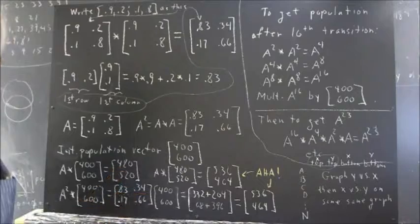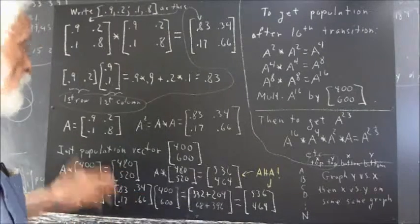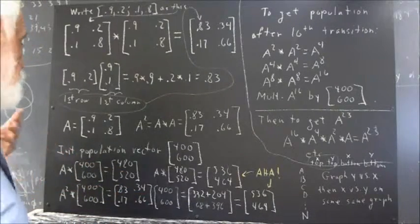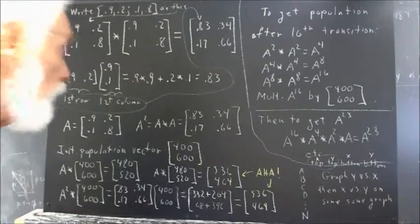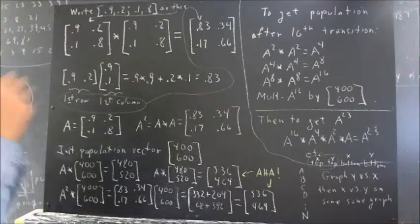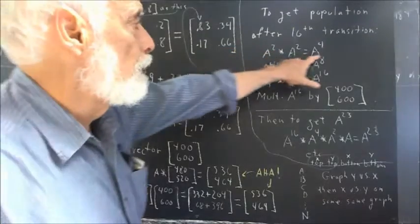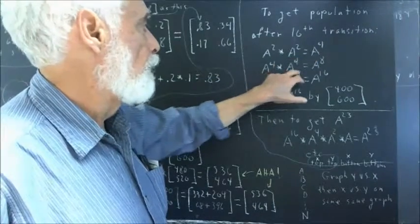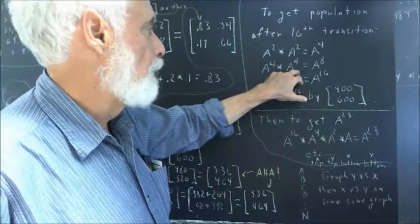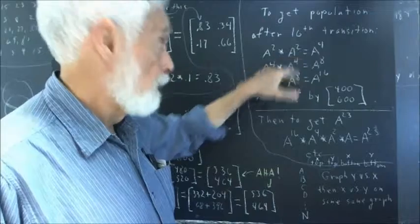Now, if the goal is to get A to the sixteenth — and that was the original question — how would we go about getting A to the sixteenth? Don't look up there where the answer is; think about it. Well, if we multiply A squared by A squared, we're going to get A to the fourth. If we multiply A to the fourth by A to the fourth, we're not going to get A to the sixteenth — four times four is sixteen, but that's not how this works.